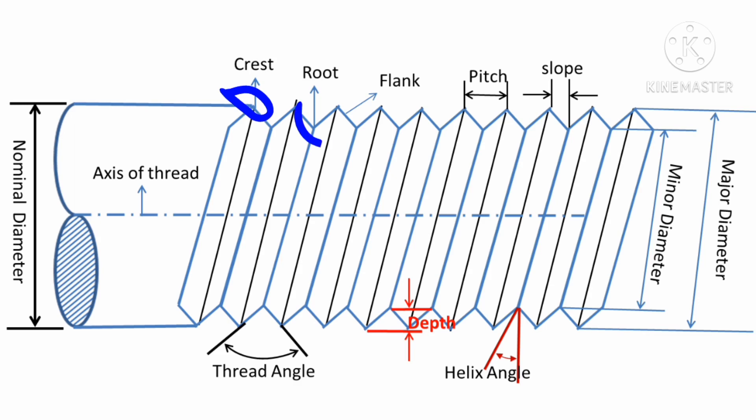There are two definitions: major diameter and minor diameter. The major diameter is the largest diameter of the internal or external thread. In this diagram, the threads shown are the threads of the bolt. The definition of major diameter remains the same whether it is internal or external — it is the largest diameter of the thread, or the distance between the two crests.